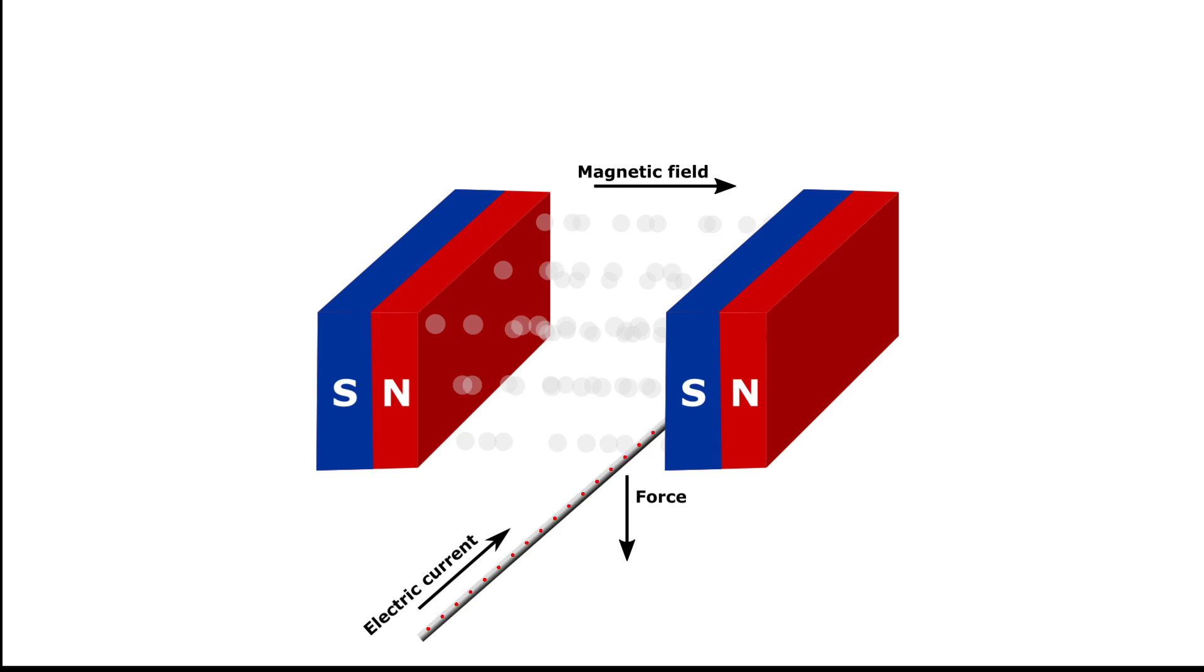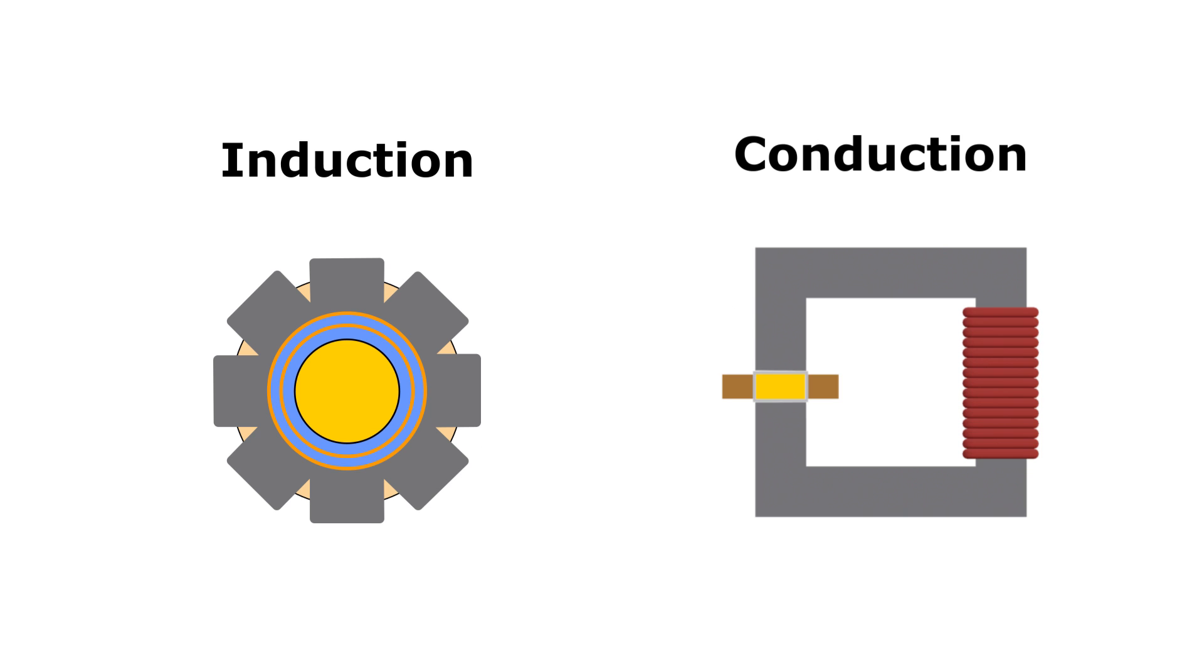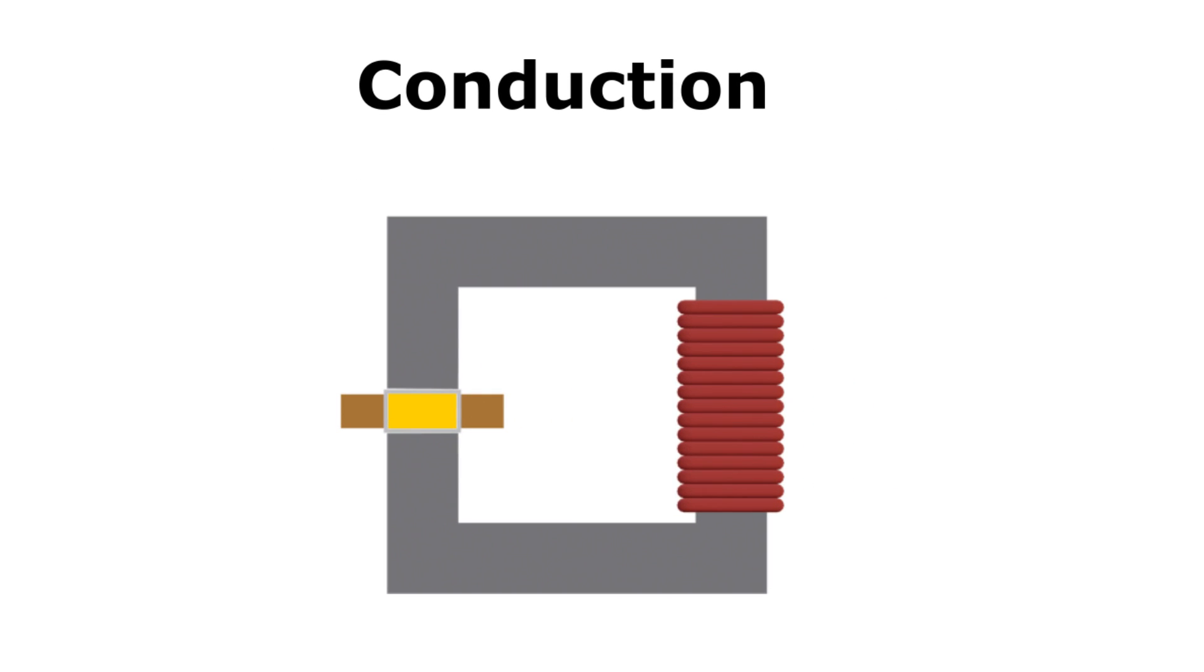However, in an EM pump, the portion of the wire that's inside the magnetic field is replaced with a conductive fluid, in most cases, a liquid metal. There are two basic types of EM pumps, inductive and conductive. This video is only about the conductive type.